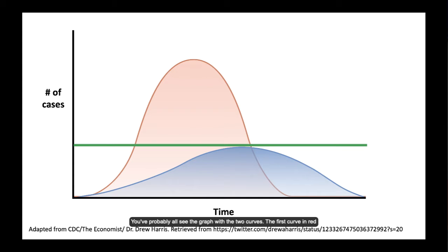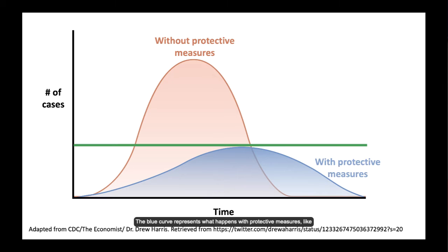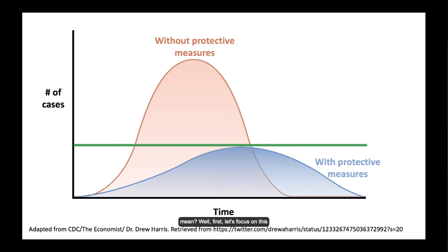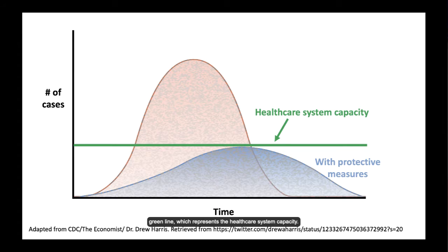You've probably all seen the graph with the two curves. The first curve in red represents the number of people who get sick without protective measures. And the blue curve represents what happens with protective measures like social distancing, washing your hands, covering your face when you cough, and so on. But what does it actually mean? Well first, let's focus on this green line which represents the healthcare system capacity.